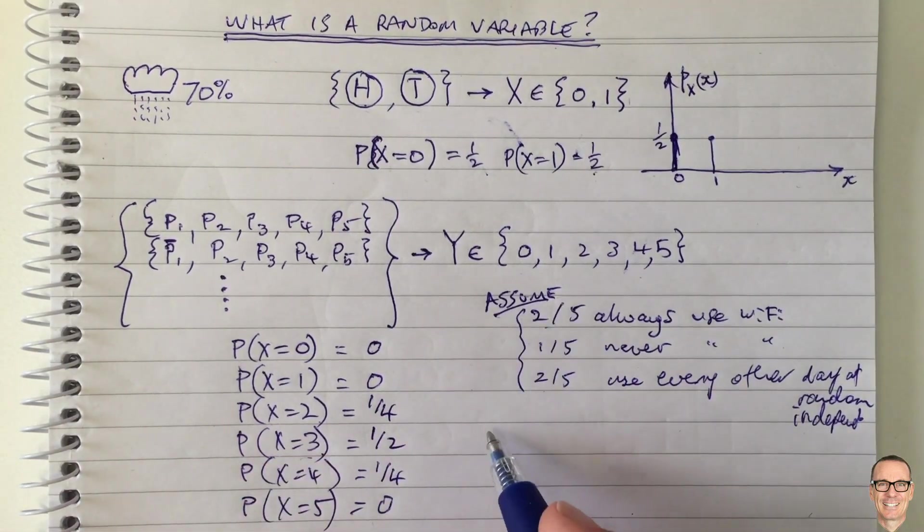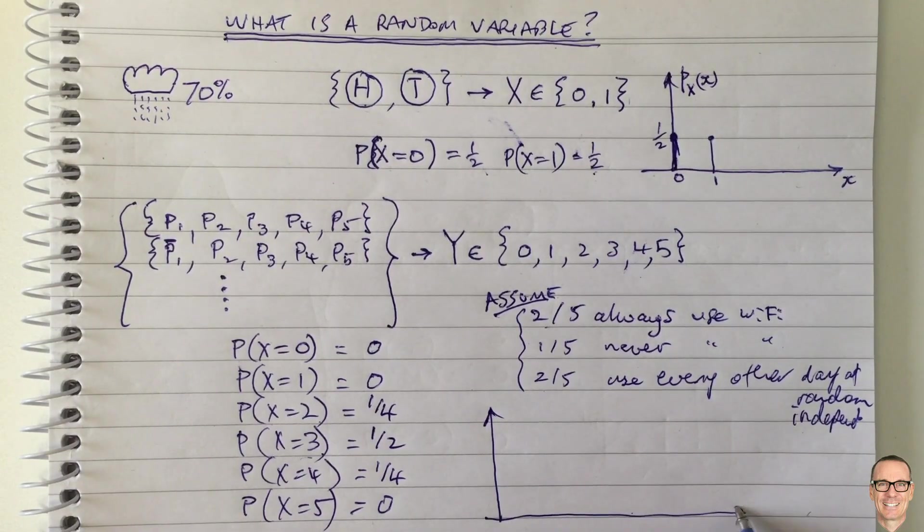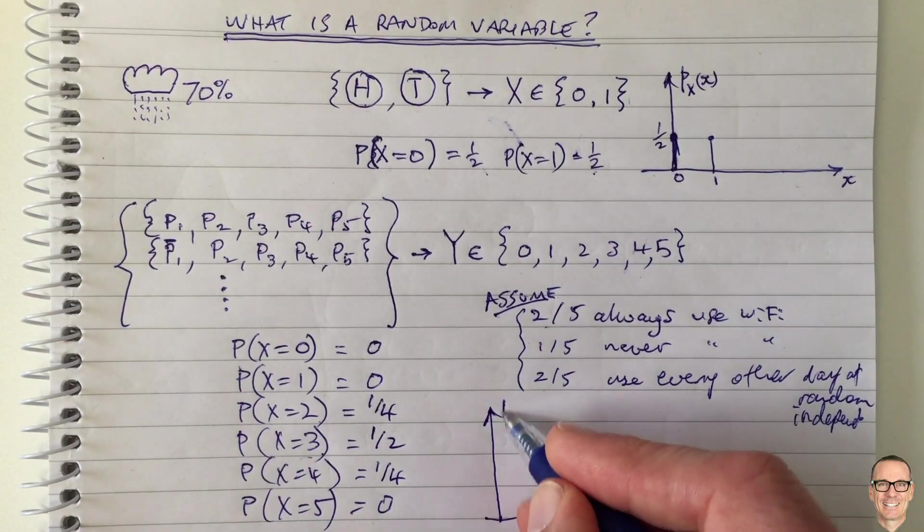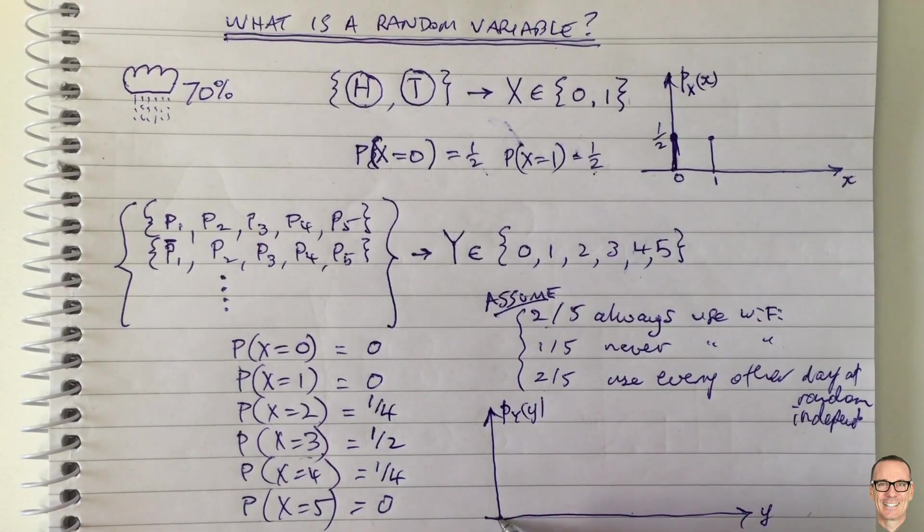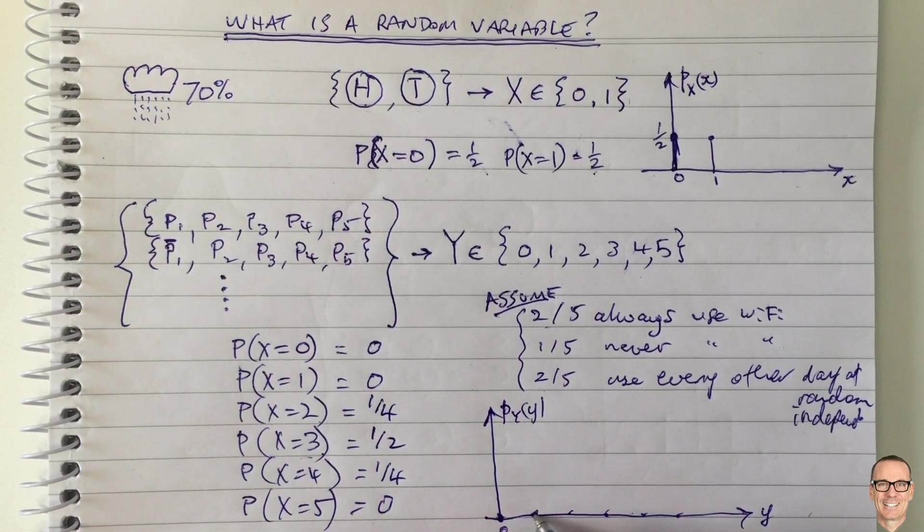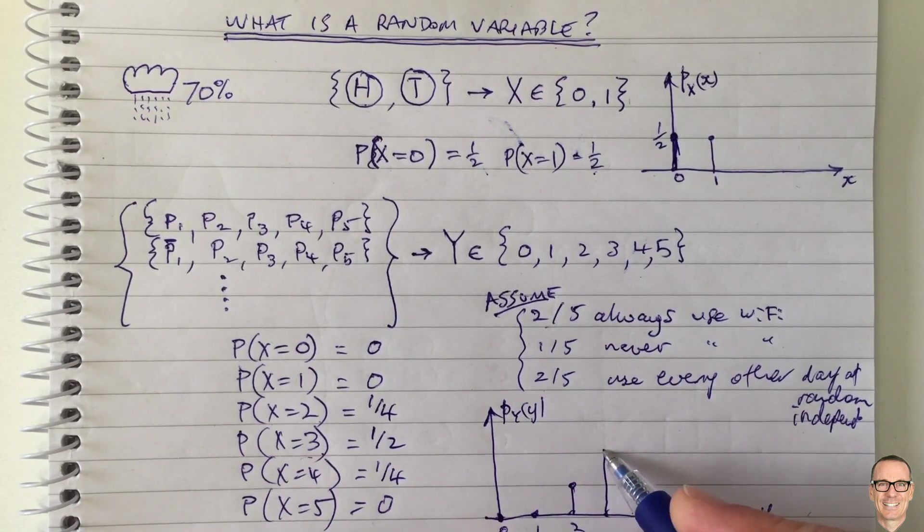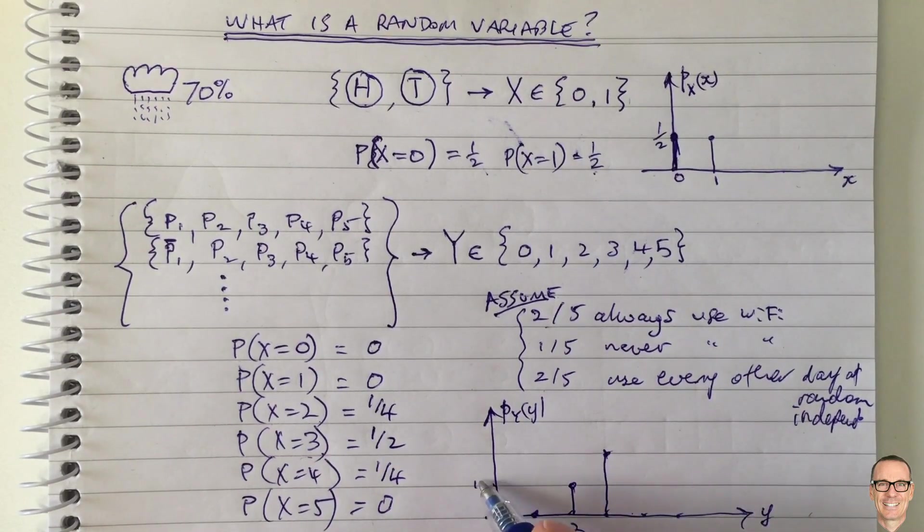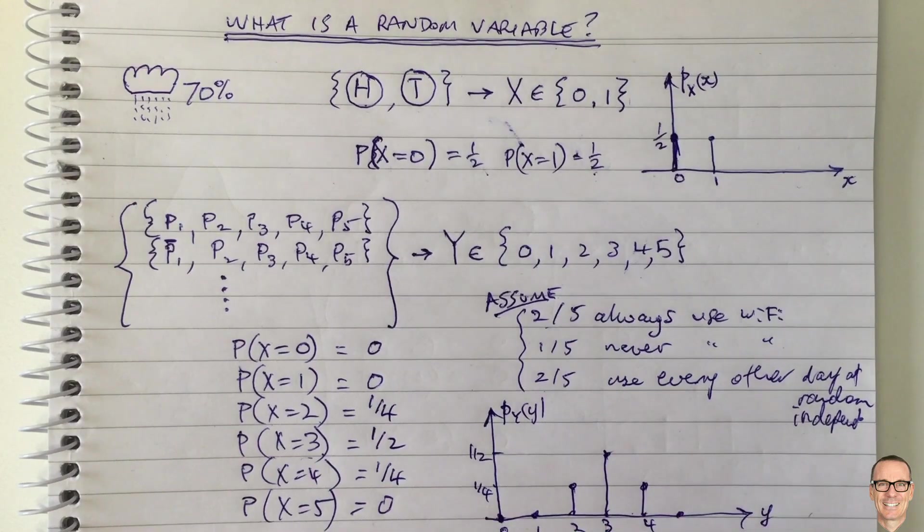So if we use these modeling assumptions, that would give us a probability density function for this case here: probability density function of Y with values y, which has finite values again up to five. There's no chance of getting zero, no chance of getting one, a quarter chance of getting two, half a chance of getting three, quarter chance of getting four, zero chance of getting five.